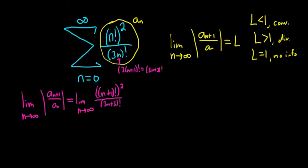All that has been written down so far is this piece here, a sub n plus 1. Now we have to divide by a sub n. When we do that, we're essentially multiplying by the reciprocal. So times 3n factorial over n factorial squared.